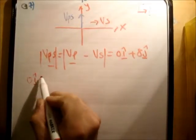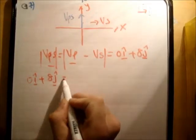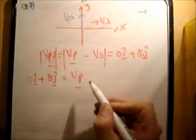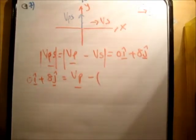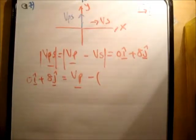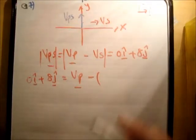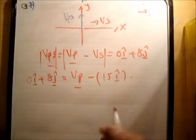So, zero i hat plus eight j hat is equal to vp minus the velocity of the ship is equal to the velocity of the ship is 15 meters per second. So, this is 15 i hat, like so.